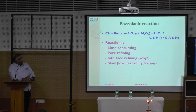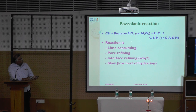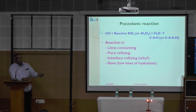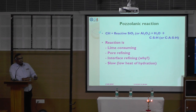So this is the reaction: C-H, calcium hydroxide, reacting with SiO2 or Al2O3 — siliceous or aluminosiliceous — with water, we are getting either C-S-H or C-A-S-H, calcium alumino silicate hydrate. These things are forming.